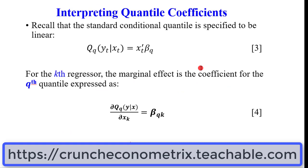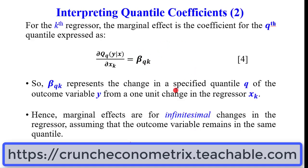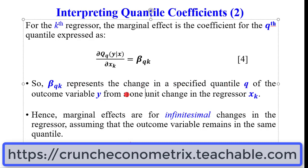How will you interpret your quantile results? The standard conditional quantile is specified to be linear, as indicated in equation 3. For the K-th regressor, the marginal effect is given by the coefficient for the Q quantile, expressed in equation 4 — simply the first differential of equation 3 with respect to the K-th regressor. BQ_k represents the change in a specified quantile Q of the outcome variable Y from one unit change in the regressor X_k.